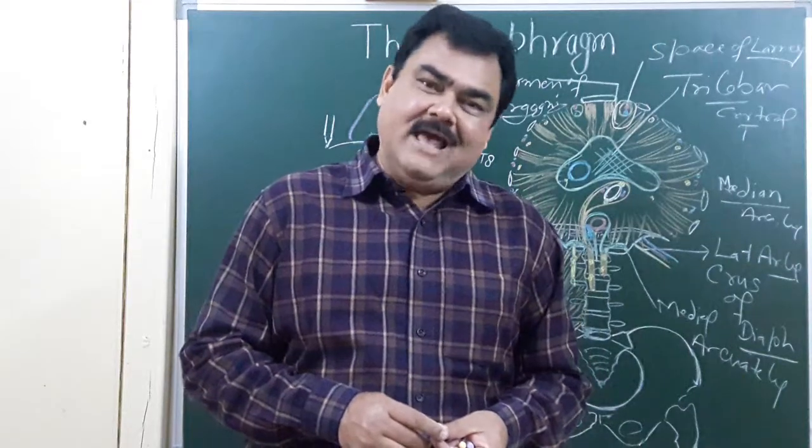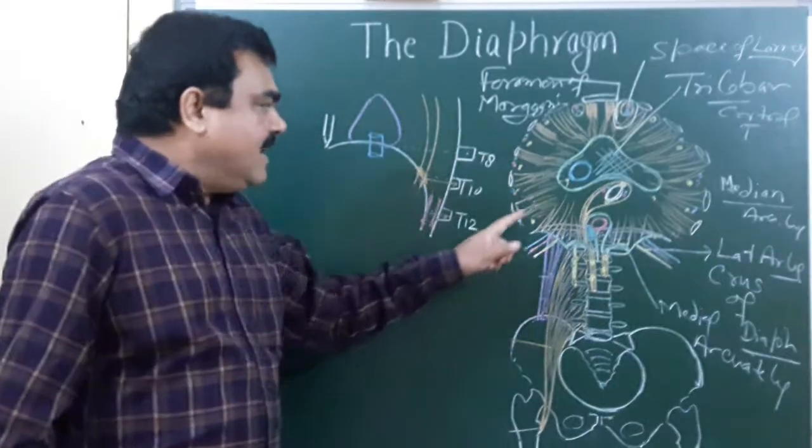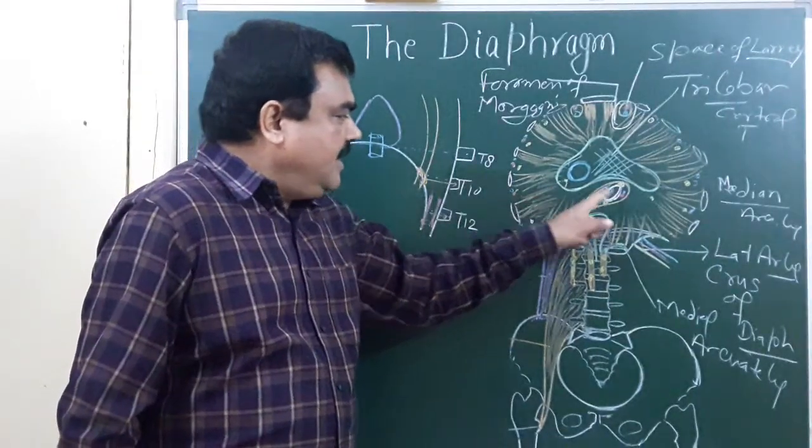Now, nerve supply of the diaphragm. The diaphragm is supplied by this nerve, the frenic nerve.